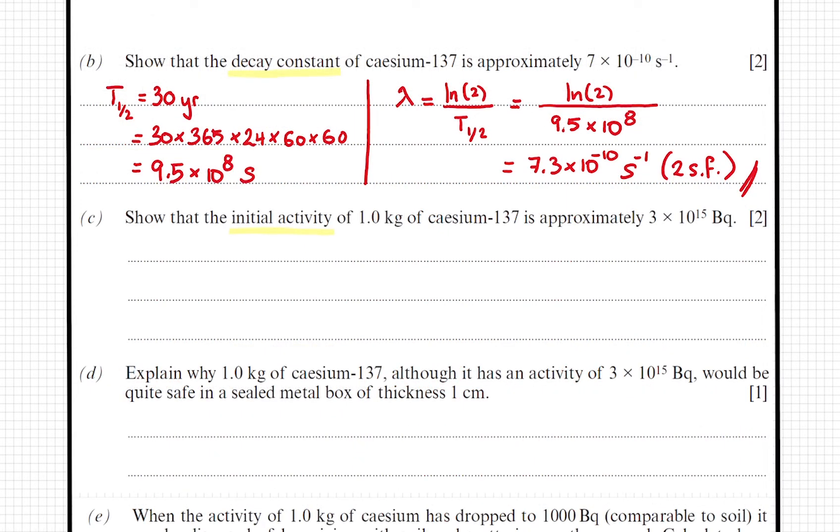And now we want to find the initial activity of 1 kilogram of cesium. I know that activity is proportional to the number of radioactive nuclei in the sample. And the constant of proportionality between them is the decay constant, which we know.